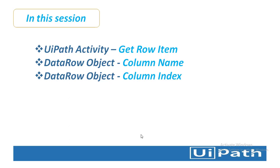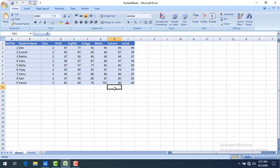In this session we will learn how to get a value from a data row variable. On my screen I have different ways: one is by using the Get Row Item activity, another is the data row object based on the column name, and another is the data row object based on the column index. We will see all these possibilities to fetch a value from a data row variable.